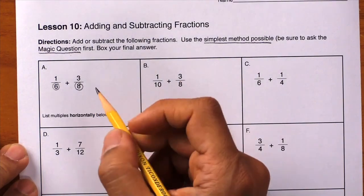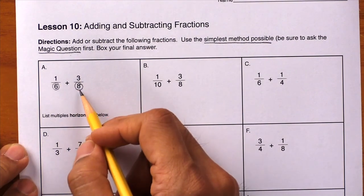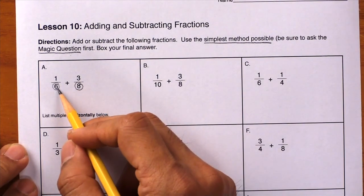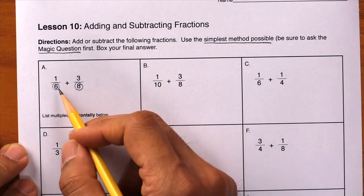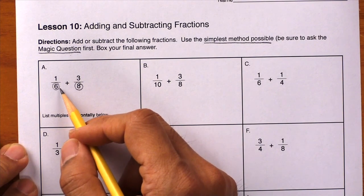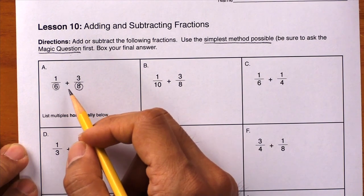So let's use the LCM, or Lowest Common Multiple, to change the names of these fractions properly. Let's try the magic question first. Larger number divided by the smaller number. Can you do eight divided by six evenly? The answer is no, so we have to use a shortcut.